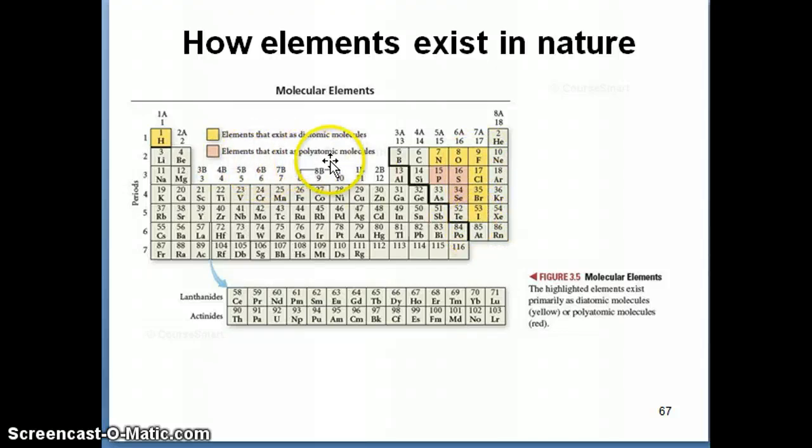There are elements that exist as polyatomic molecules when they're found. For example, phosphorus doesn't exist as just P, but it exists as P4. And then sulfur doesn't exist as S, but it exists as S8. So those are some examples of things that aren't just one atom, but they exist as the combination of atoms.